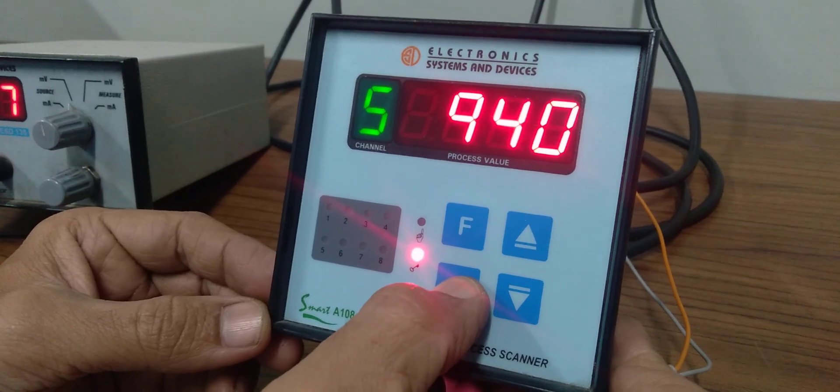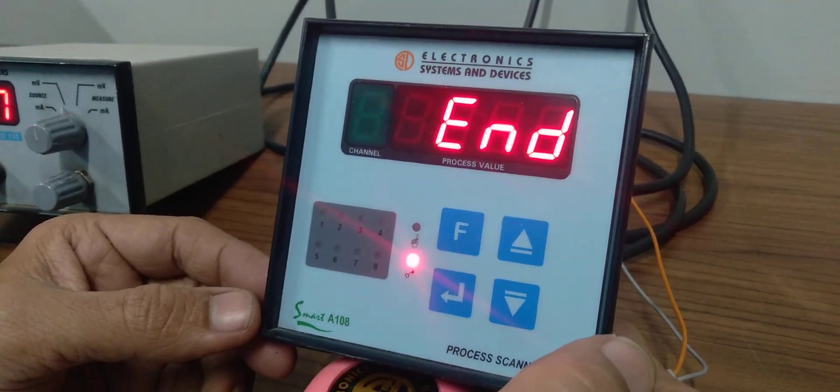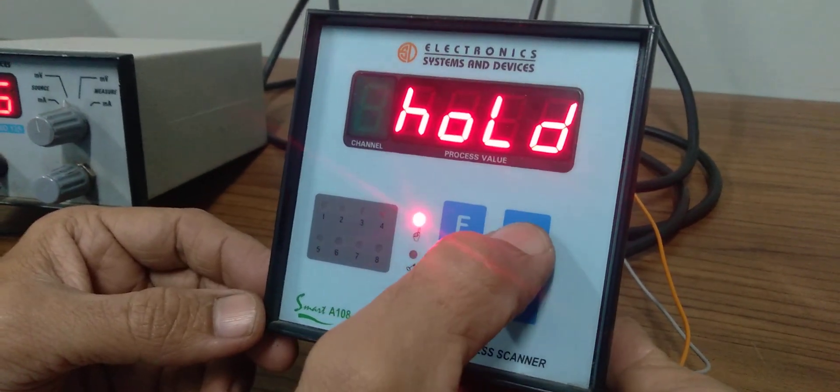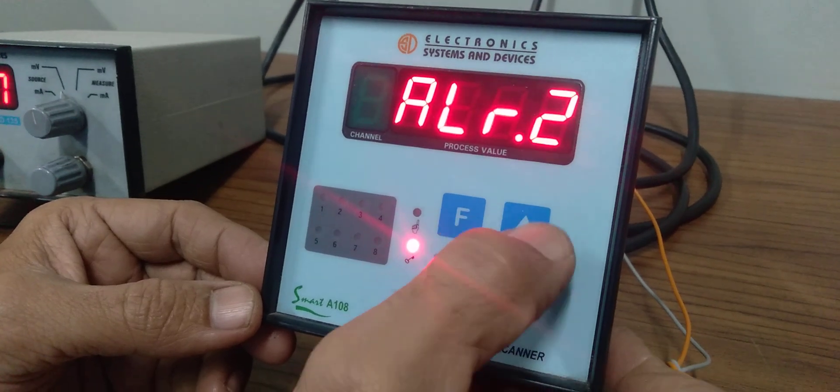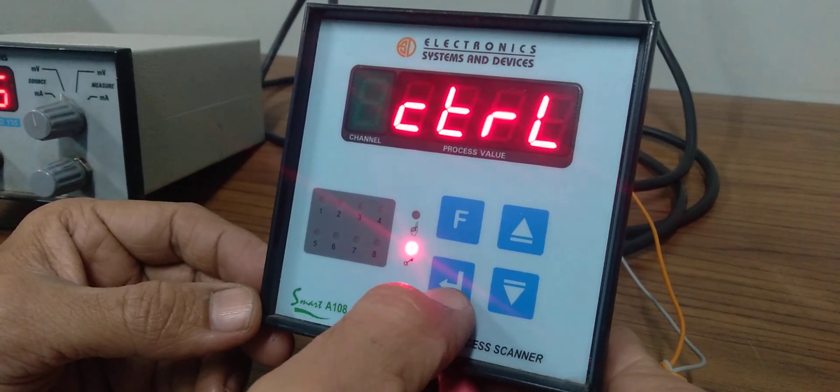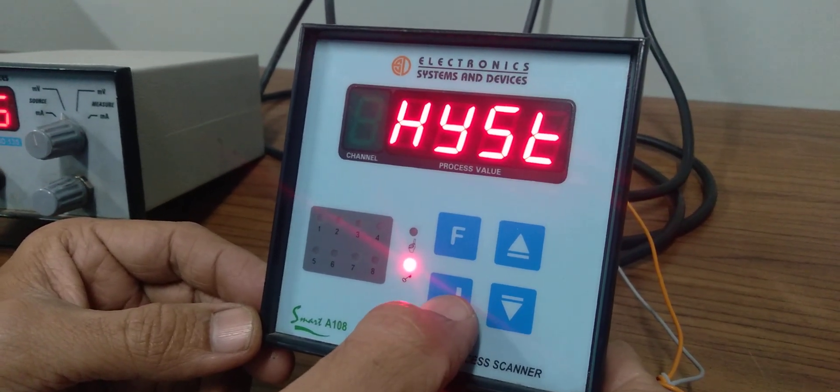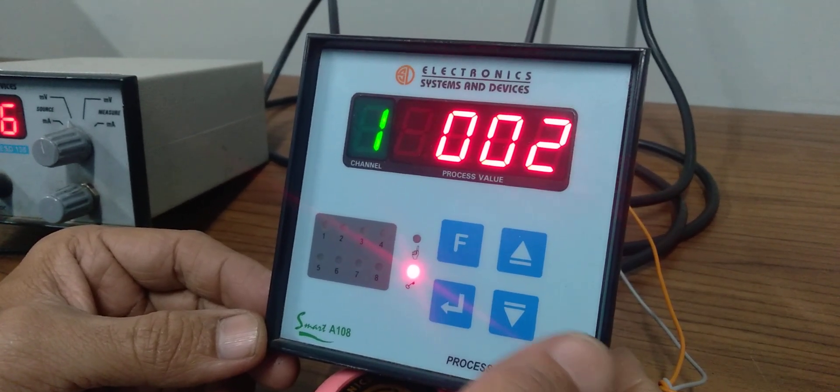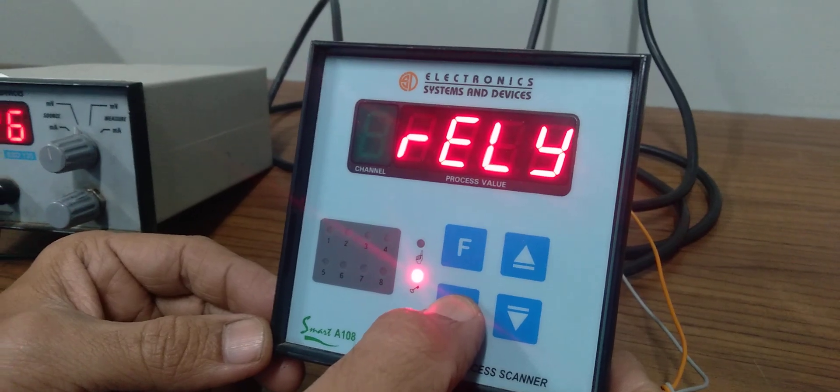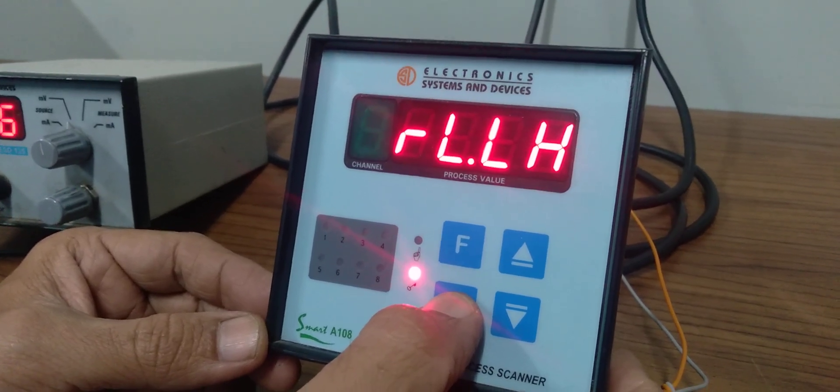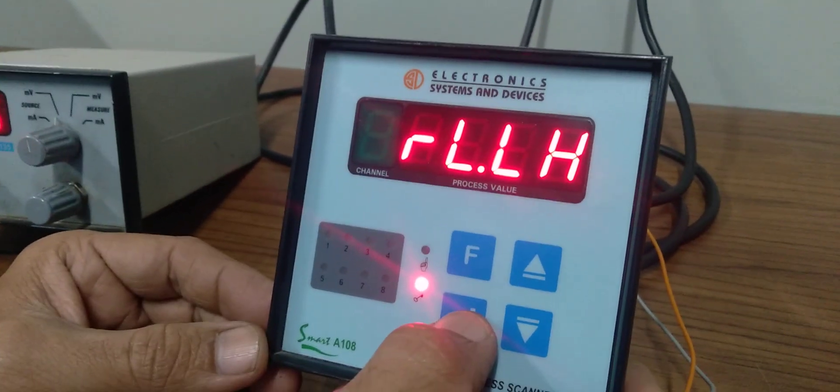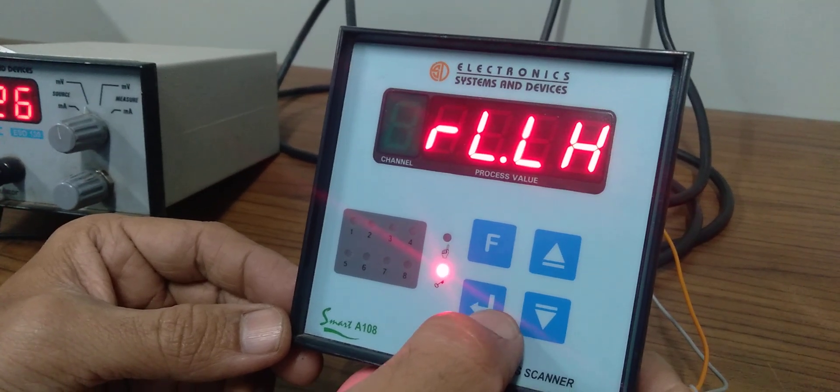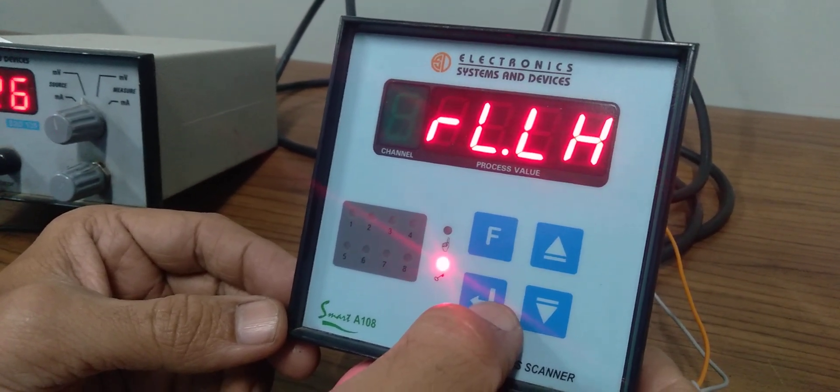We'll see the control option. The hysteresis will be common for all channels. Minimum hysteresis is two degrees. Then there's the relay logic, which can be set to low and high, with other options available.